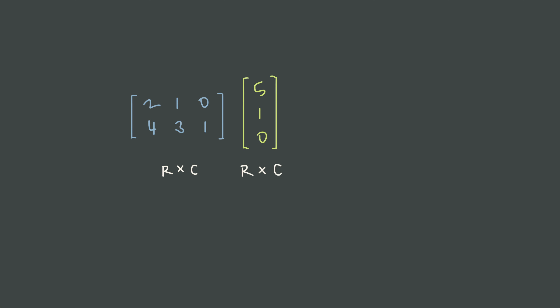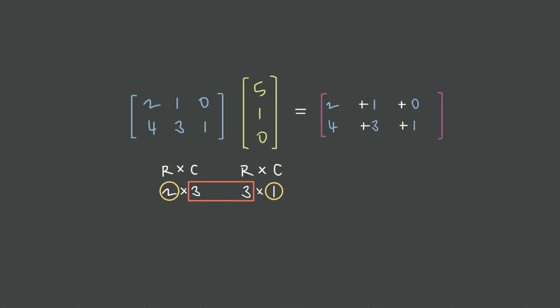This rule works for any matrices as long as those inner dimensions match. Here we have a 2-by-3 matrix multiplied by a 3-by-1 matrix. Because those inner dimensions match, we know we can multiply them, and the outer dimensions tell us the result is going to be a 2-by-1 matrix with two rows and one column. We start by multiplying the first row by the only column, then multiply the second row by the same column. When we simplify, the result is in fact a 2-by-1 matrix.